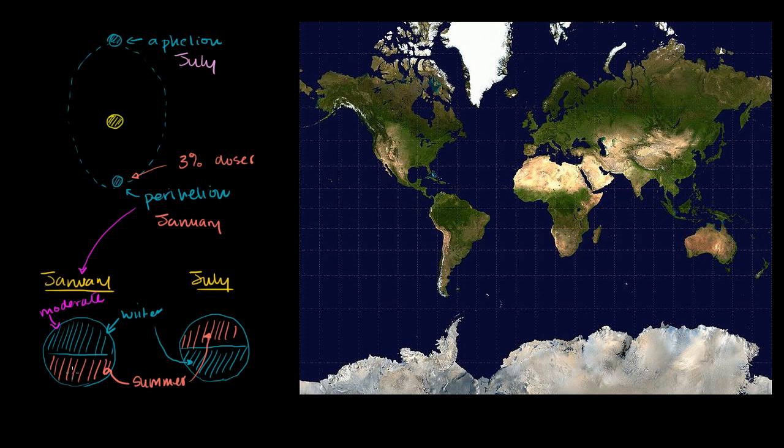And so we're getting more solar radiation in January. Does that moderate the winter in the northern hemisphere? Or another way to think about it, does it make the summer in the southern hemisphere, when we are closer to the sun, does it make it more extreme or hotter? And vice versa, in July, when we are furthest from the sun, does that moderate the northern hemisphere summer? Because it's hot up there, but we're a little bit further from the sun. And does it make the southern hemisphere winter colder?